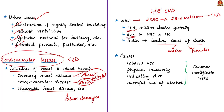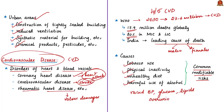If current trends continue, WHO estimates 23.6 million people will die from CVD annually by 2030. In India, CVD is the leading cause of death in both males and females in urban and rural areas. Major modifiable risk factors include tobacco use, physical inactivity, unhealthy diet, and harmful use of alcohol. Individuals at risk show raised blood pressure, raised glucose levels, raised lipids, overweight, and obesity — all measurable at primary health care facilities.